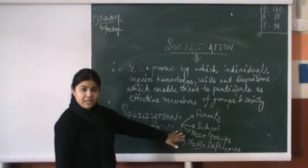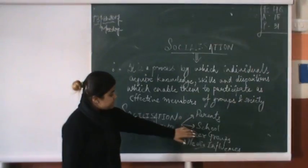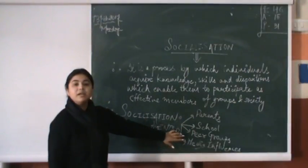Basically we have four major areas. One is our parents, second is school, third is peer group, and then media influences.